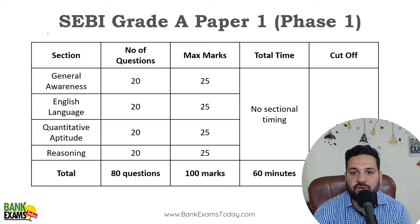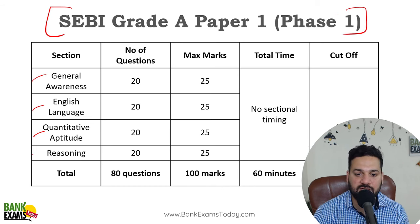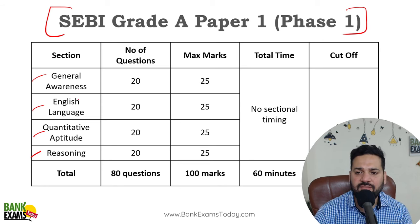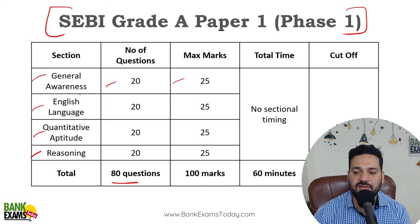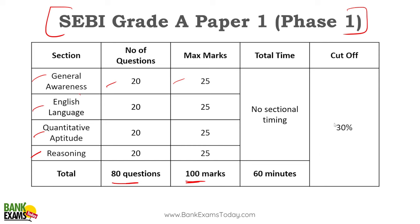For SEBI Grade A Phase 1, Paper 1, there is general awareness, English language, quantitative aptitude, and reasoning ability — each having 20 questions and 25 marks, so total 80 questions and 100 marks. You need to complete it within 60 minutes.